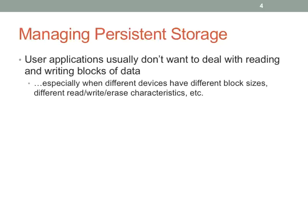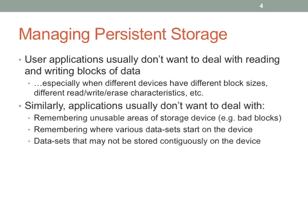Different devices may have different block sizes. Historically, hard disk sectors were 512 bytes; now we're getting to 4 kilobytes most of the time. Optical drives and tape drives all have different block sizes. Applications don't want to think about things like what happens when a sector goes bad — the OS has to deal with that. Thankfully the OS does, so applications don't. I've rarely written code that had to think about unusable blocks or blocks that became unusable over time.